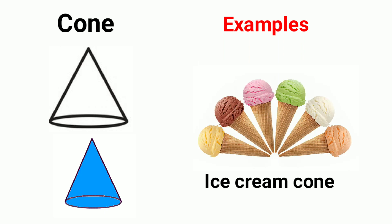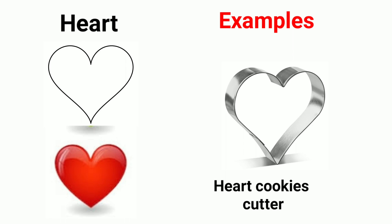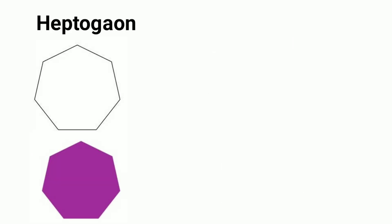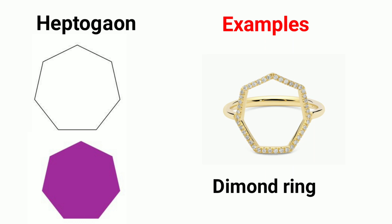Heart. Examples of heart shapes: green leaf, heart cookie cutter, key bunch. Heptagon. Examples of heptagon shapes: spider web, diamond ring.